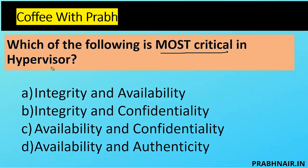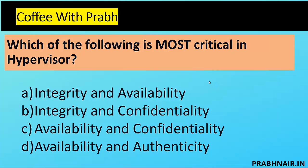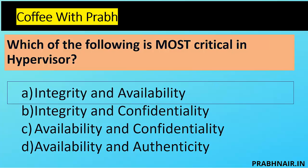Removing option C (availability and confidentiality) and option D (availability and authenticity) — authenticity is derived from integrity. Consider the architecture: hardware at the base, then a Type 1 hypervisor on top, and then the virtual machines. If someone compromises the hypervisor, they can access all machines. If hypervisor services are unavailable, all guest hosts are impacted. Therefore, the best answer is A: integrity and availability.